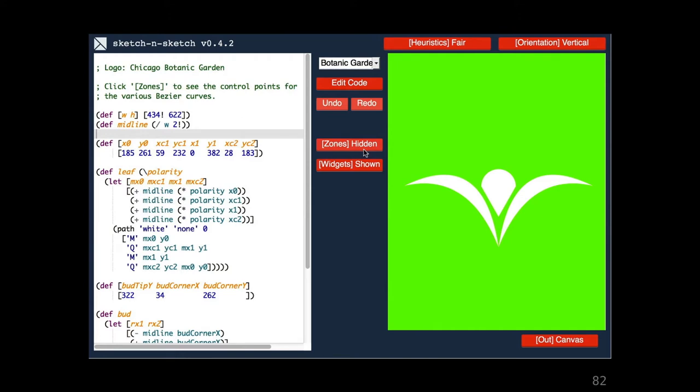This program imitates the logo for the Chicago Botanic Garden. The design symmetry is enforced by the program. If we move a control point of the Bézier curve on one side, its mirror point moves as well.